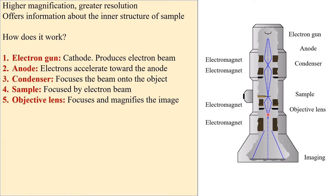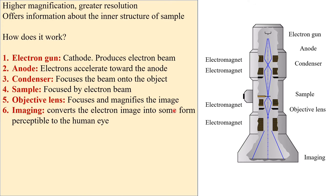Next is the objective lens. It is used to focus and magnify the image. Last is the imaging system. It converts the electron image into some form that is perceptible to the human eye. Finally image is digitally captured for display on a computer monitor.